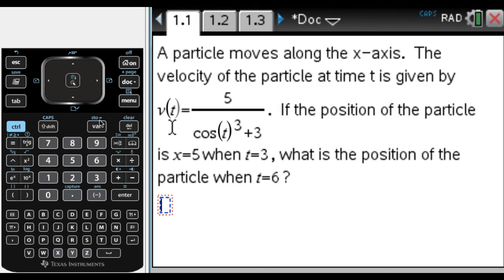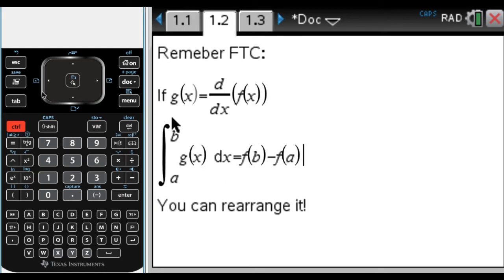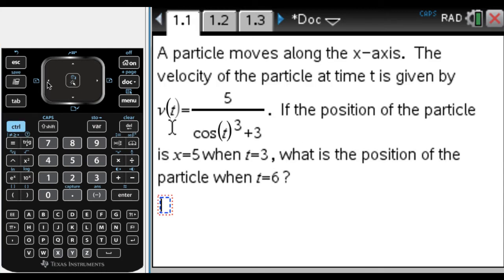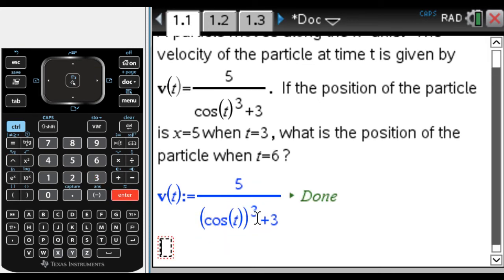To move between pages, you can do ctrl and then right or left arrow, depending on which way you want to go. Okay, so here we are. I know that when t = 3, x = 5. That's where I'm starting. Let me define the function. So v(t) := 5/(cos(t)³) + 3. Press enter, it says done, that's good.